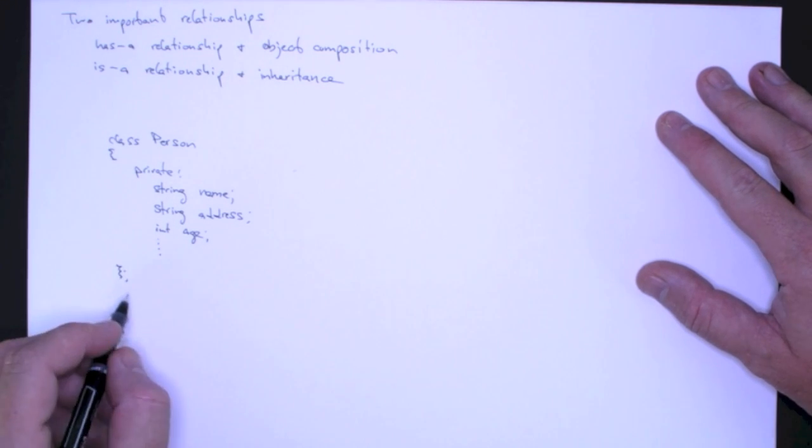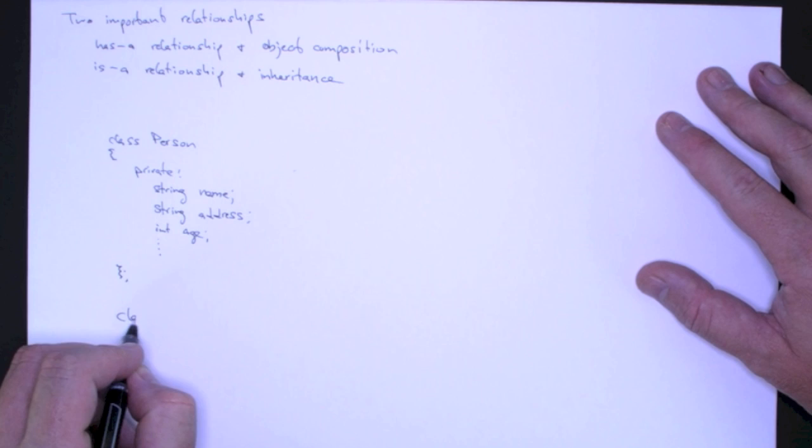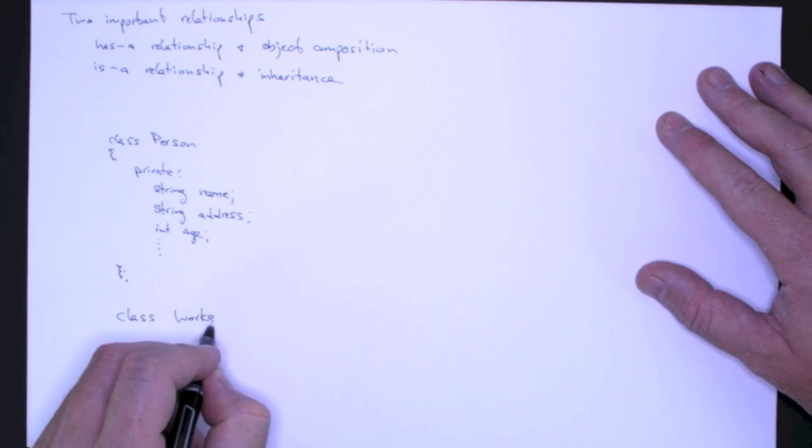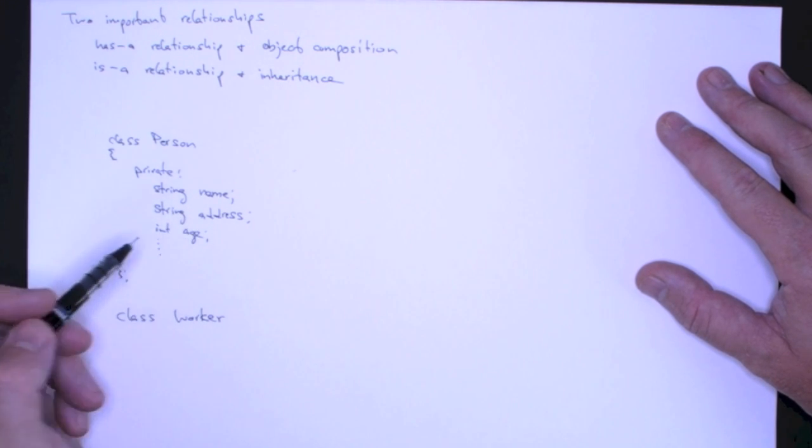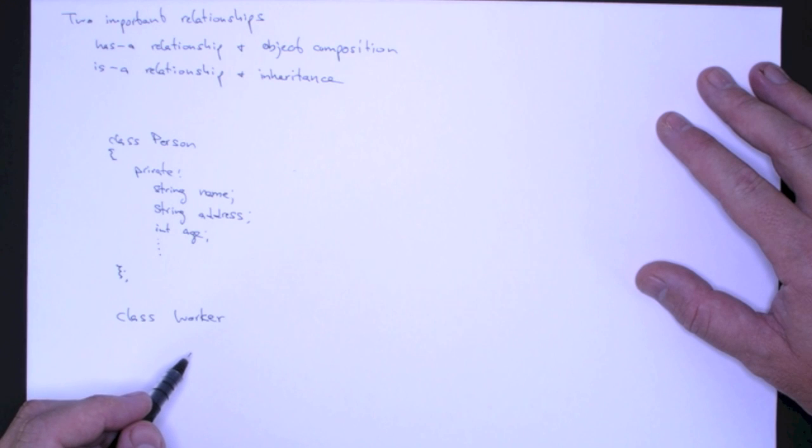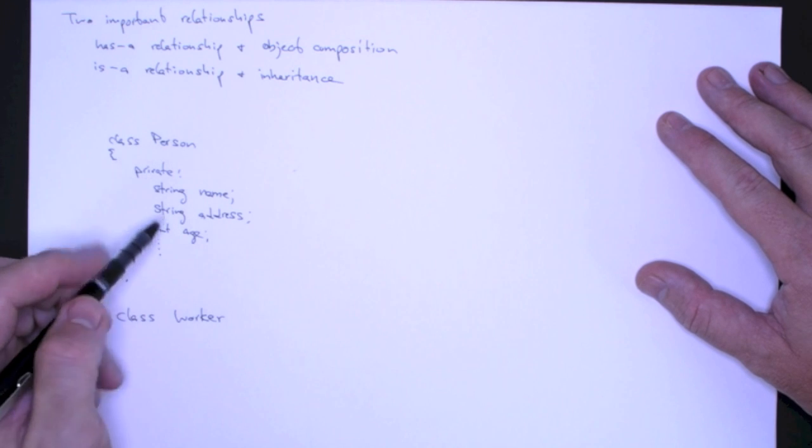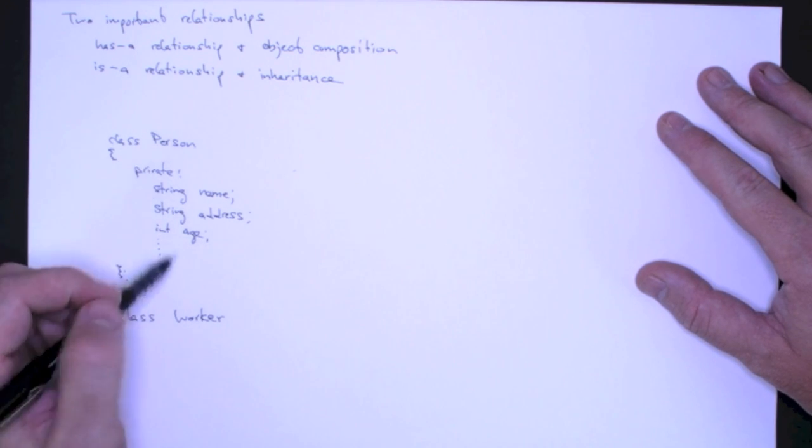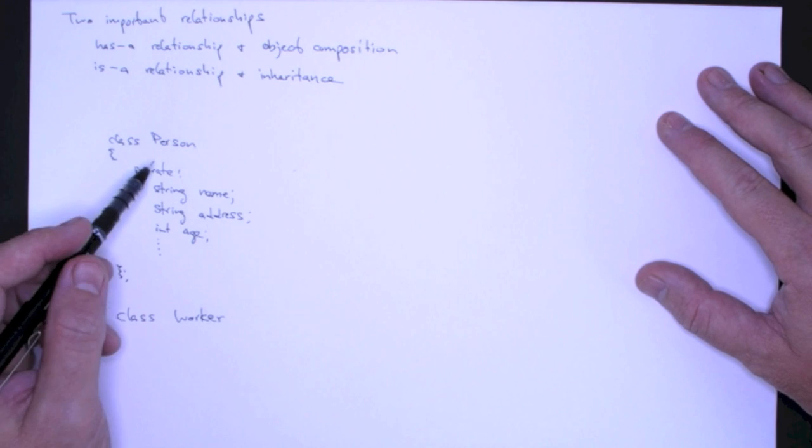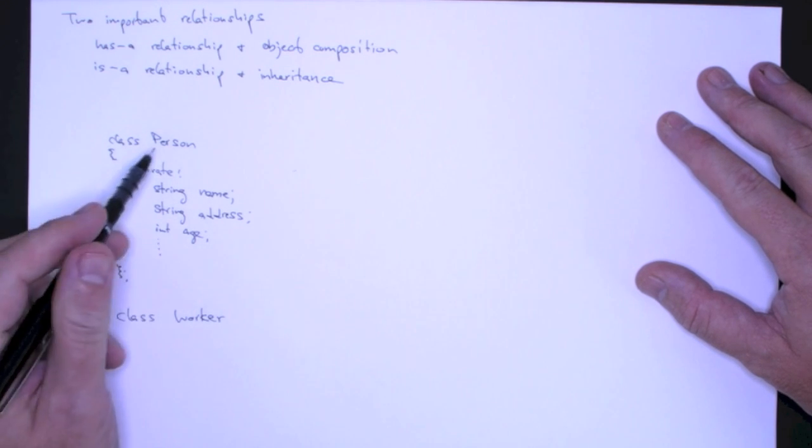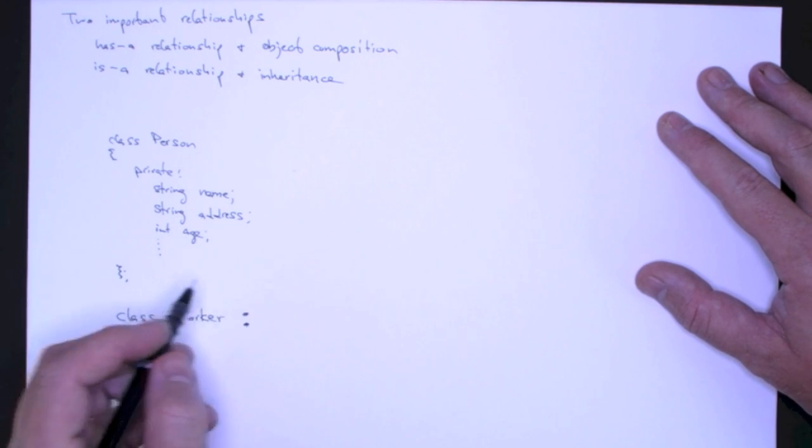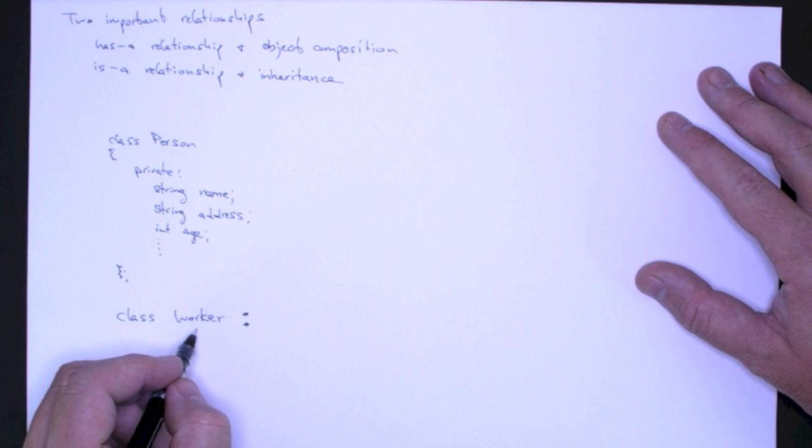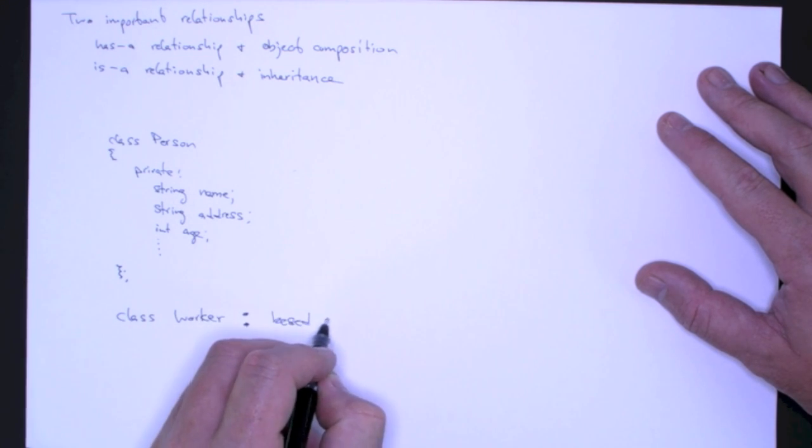Now if we wanted to define a Worker, a worker is a person. A worker also has a name, an address, and an age. They might have other properties characteristic of them, but the important thing here is you would never say that a person has a worker. Maybe if they're employing a worker, but in this case, what we're saying is that a worker is a person. Informally, I'm going to say that this worker is based on person.